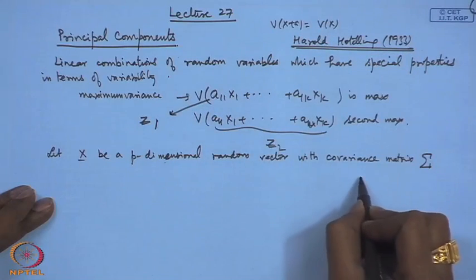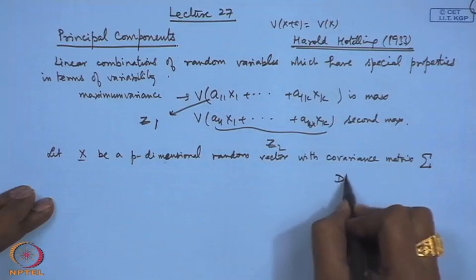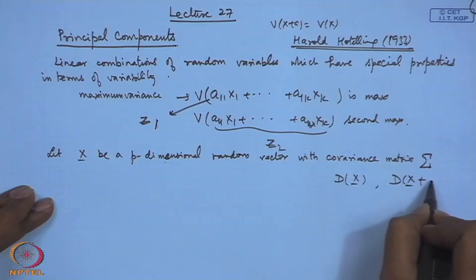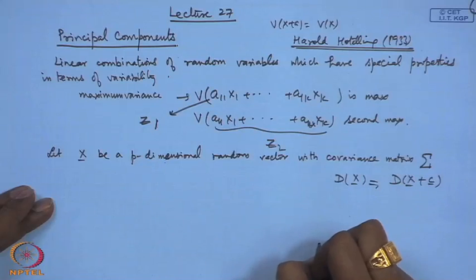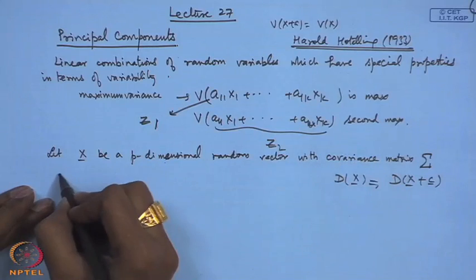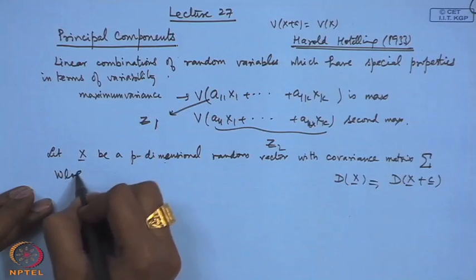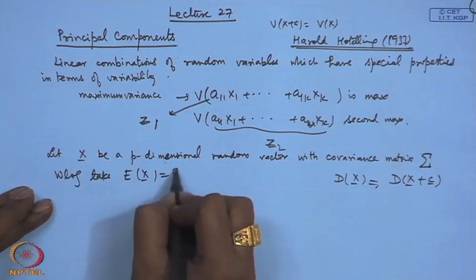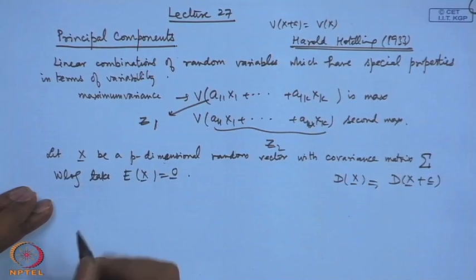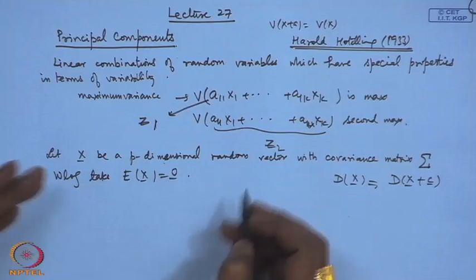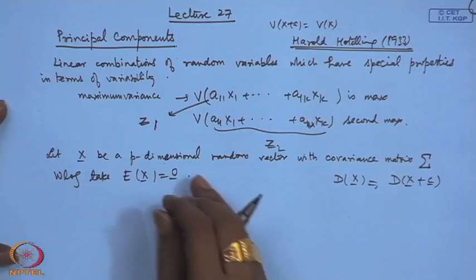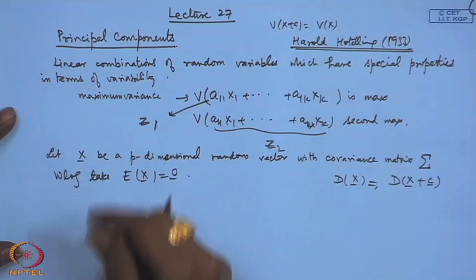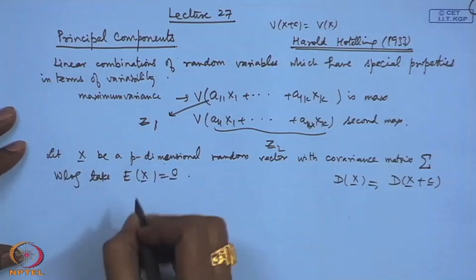If I shift all observations by the same amount then the variability is not affected — for example, variance(x + a) equals variance(x). So in general, the dispersion matrix of x equals the dispersion matrix of x + c. Therefore, we can take E[x] = 0 without loss of generality, which simplifies calculations.